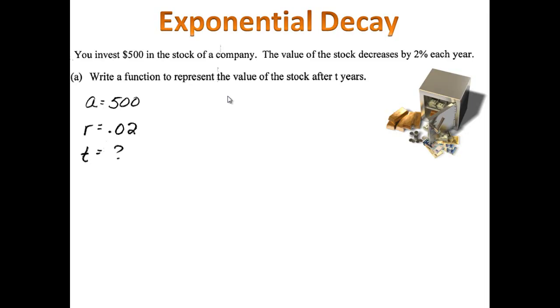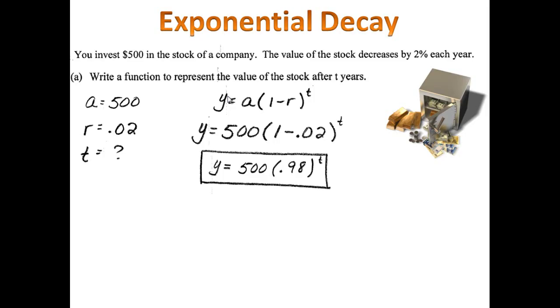We found the value of a to be 500, that's what we started with. r, the rate of depreciation, was 0.02, that's 2%. We do not know the value of t and so we plug in what we have into our equation and we end up with y equals 500 times 0.98 to the t power.